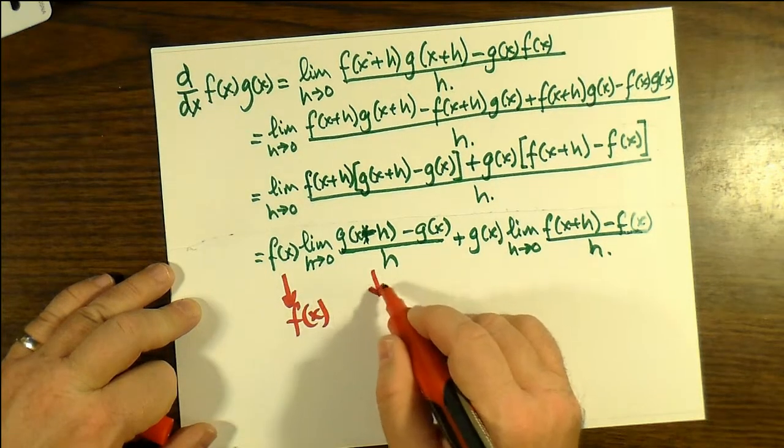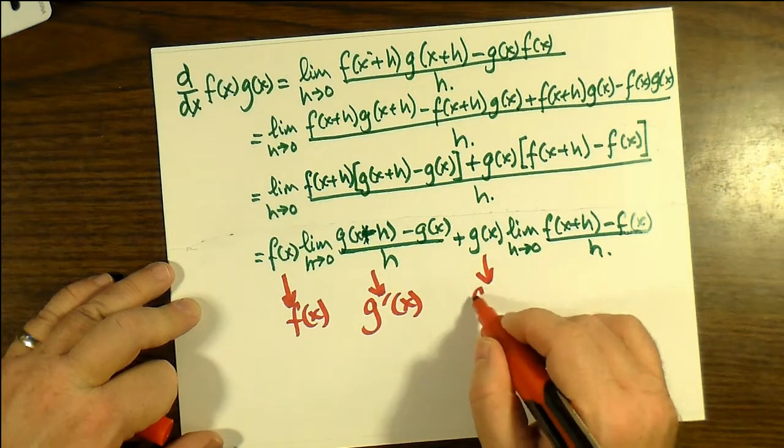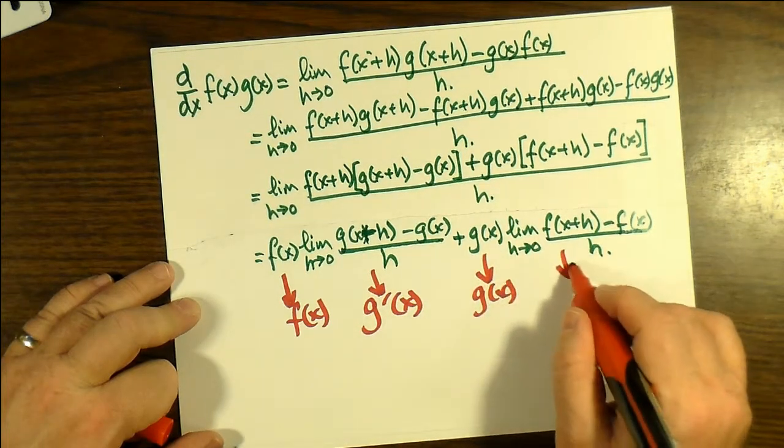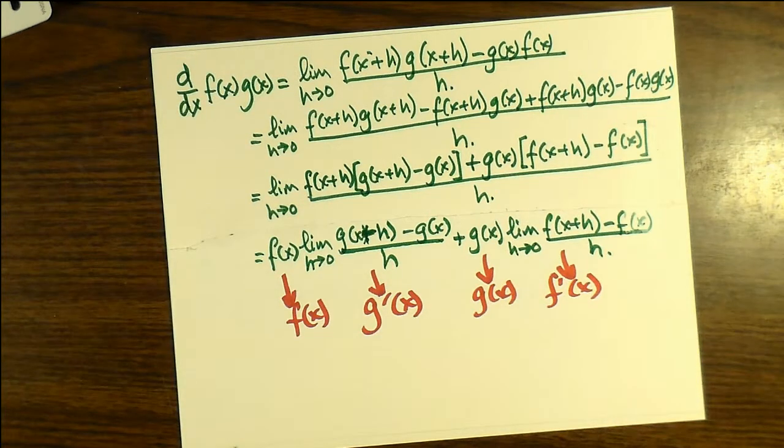Now notice that the first difference quotient, [g(x+h) - g(x)]/h, when that limit goes to zero, it's going to be g'. The other difference quotient, [f(x+h) - f(x)]/h, is f'.